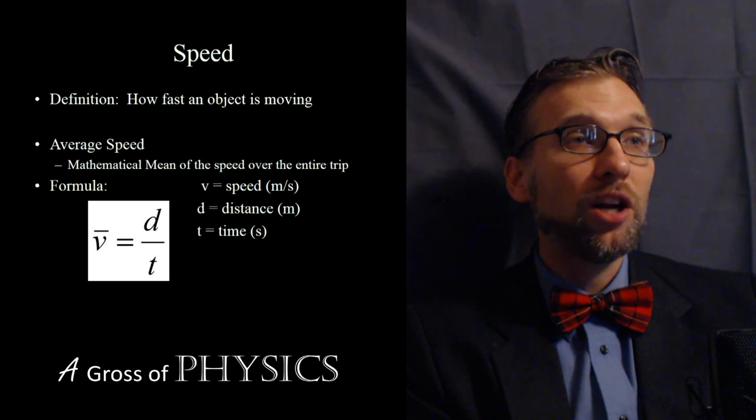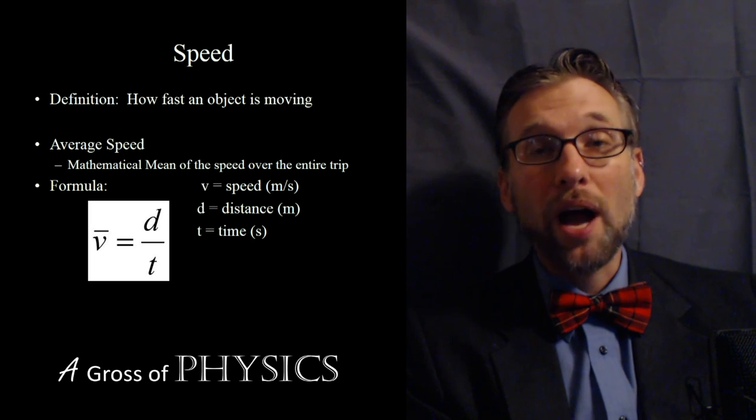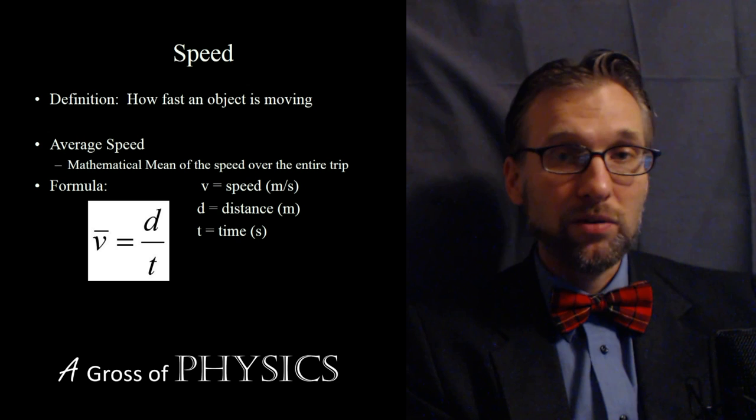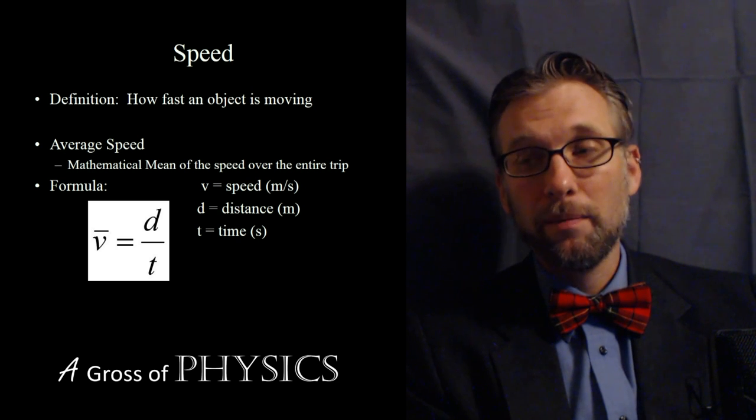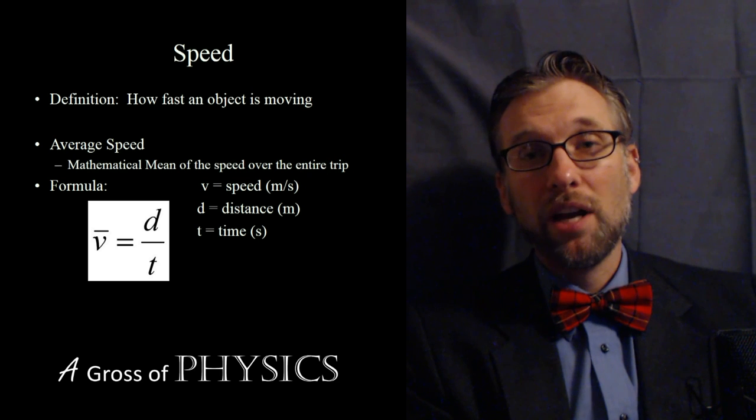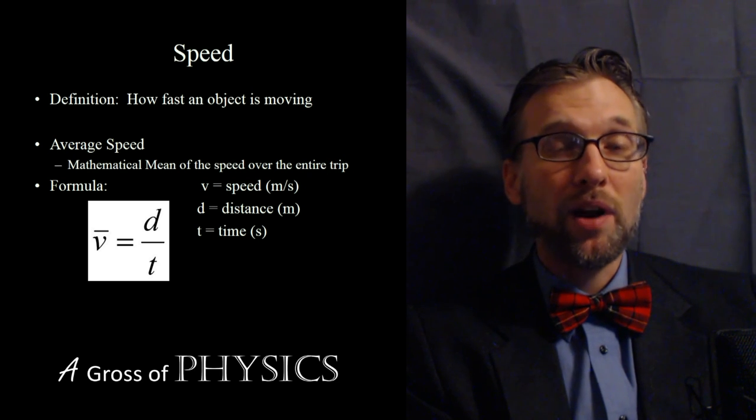The average time would be the total time for the entire trip and the distance you travel. For example, if I travel 100 miles and it takes me two hours, including all the slowing down, starting, and different portions of my trip, that would be 100 miles divided by two hours, or an average of 50 miles per hour.